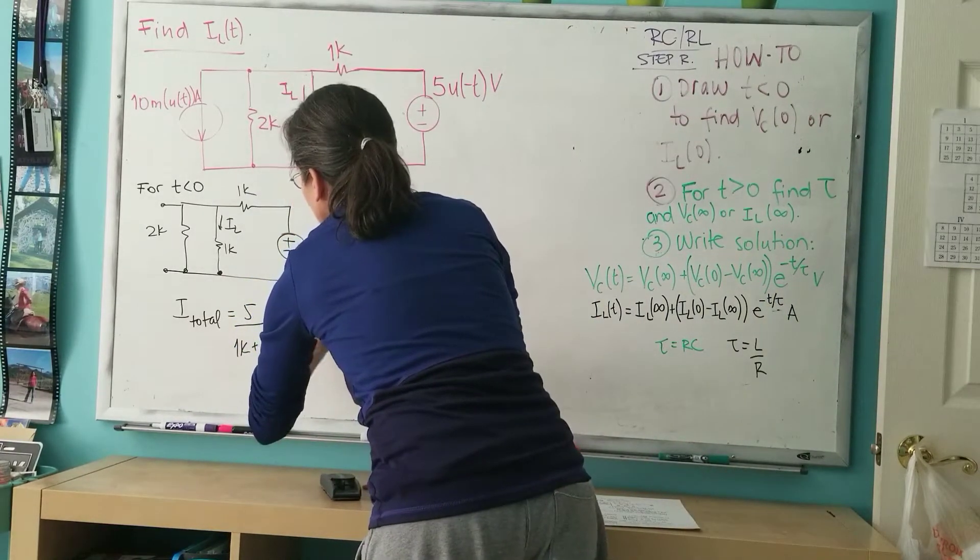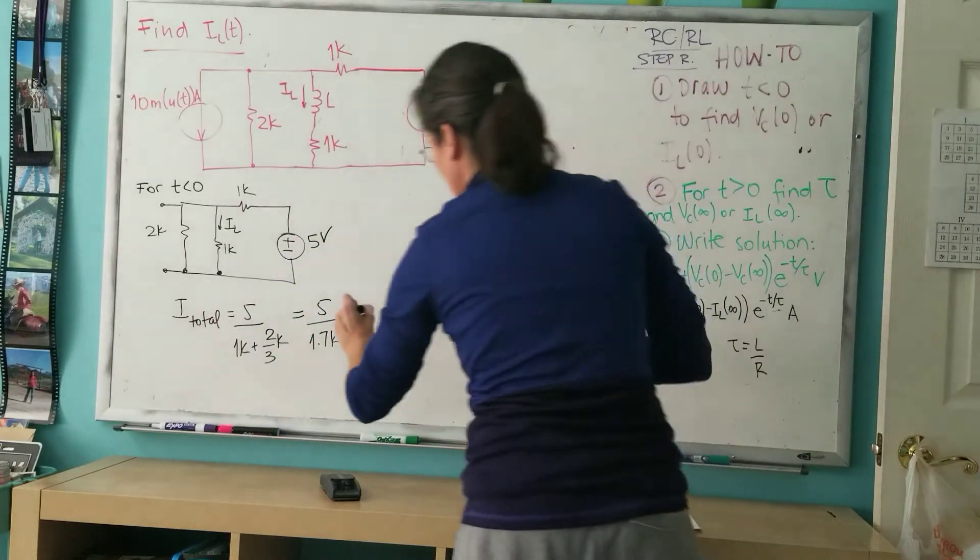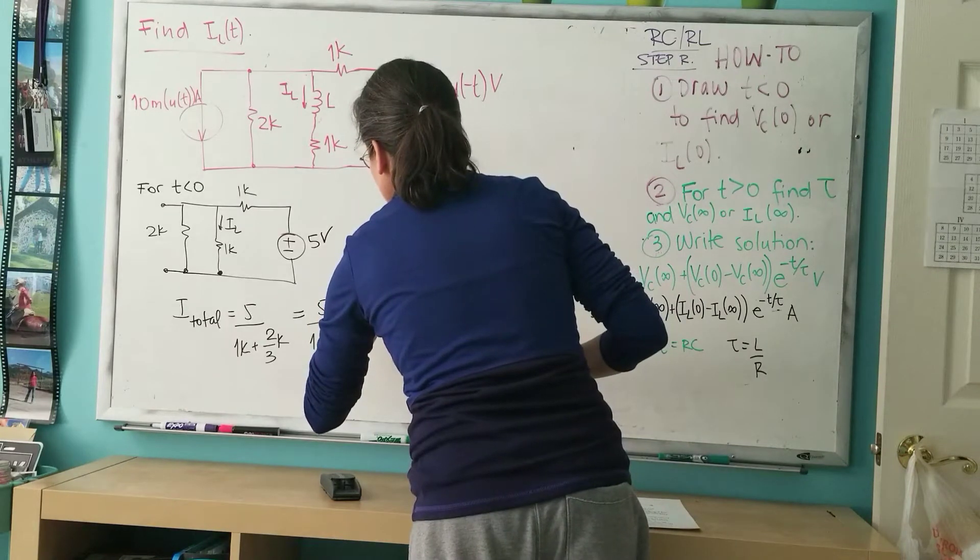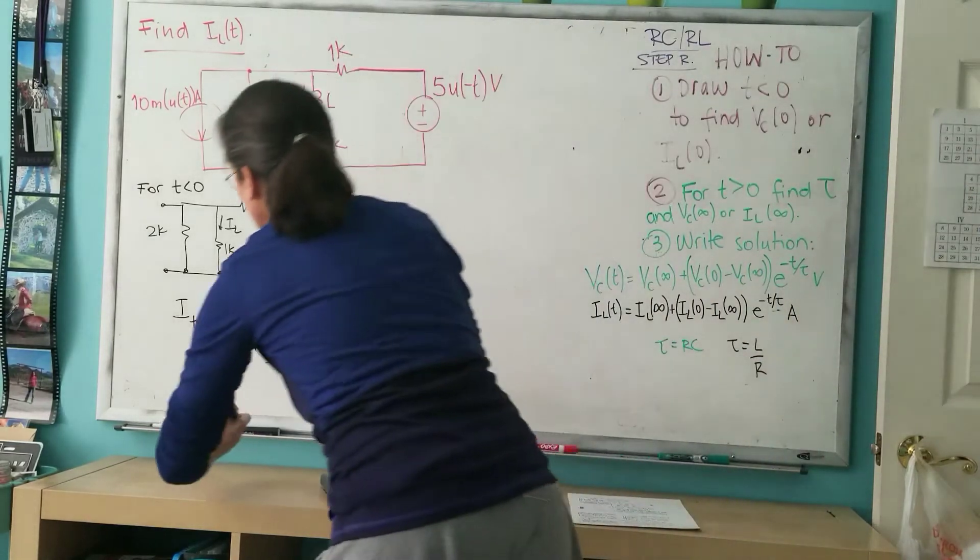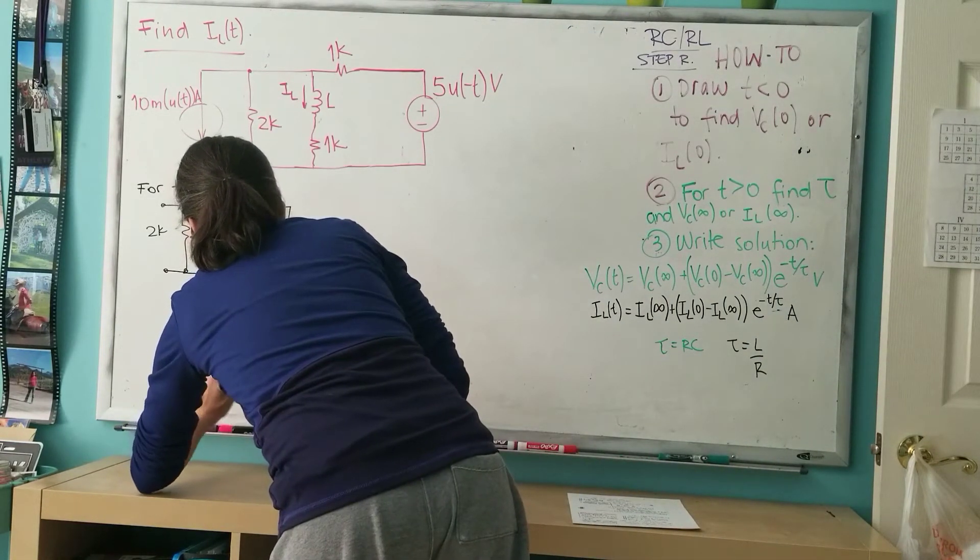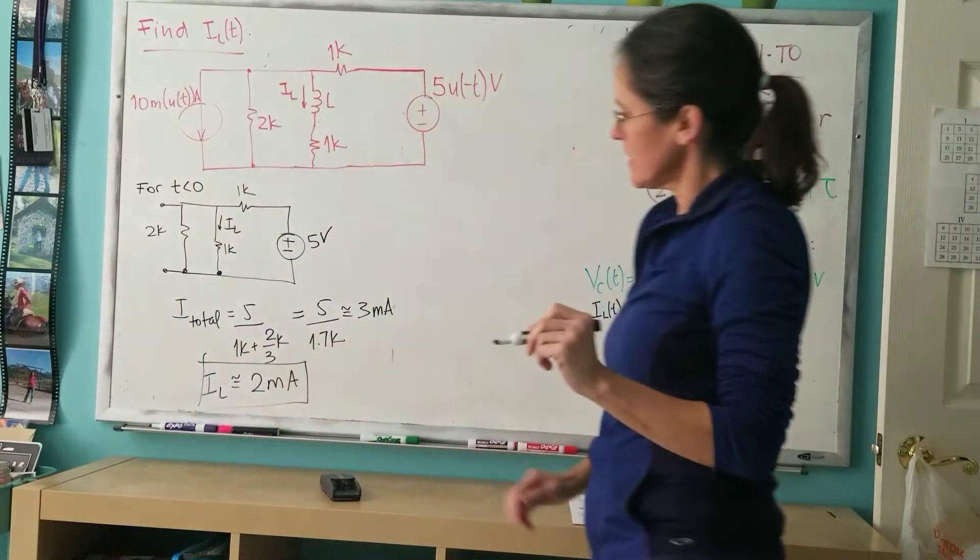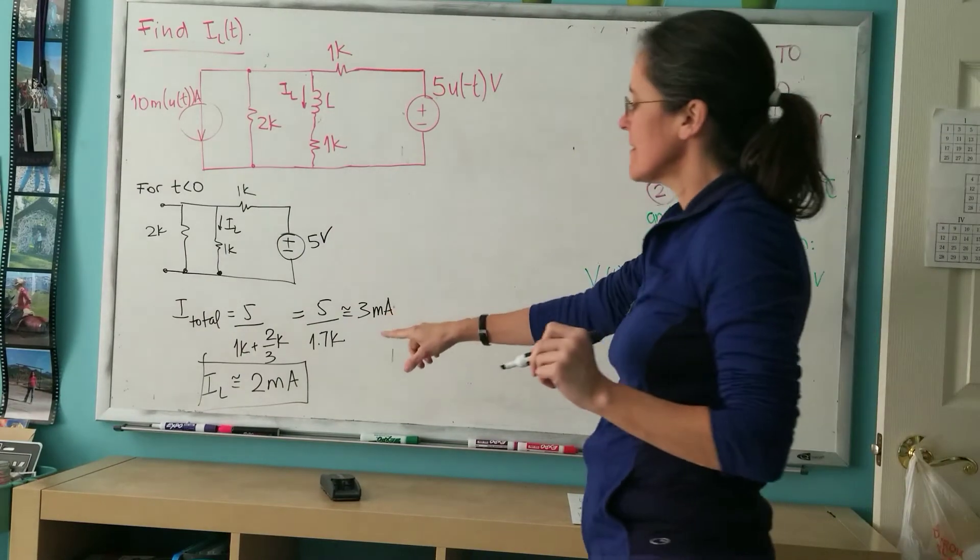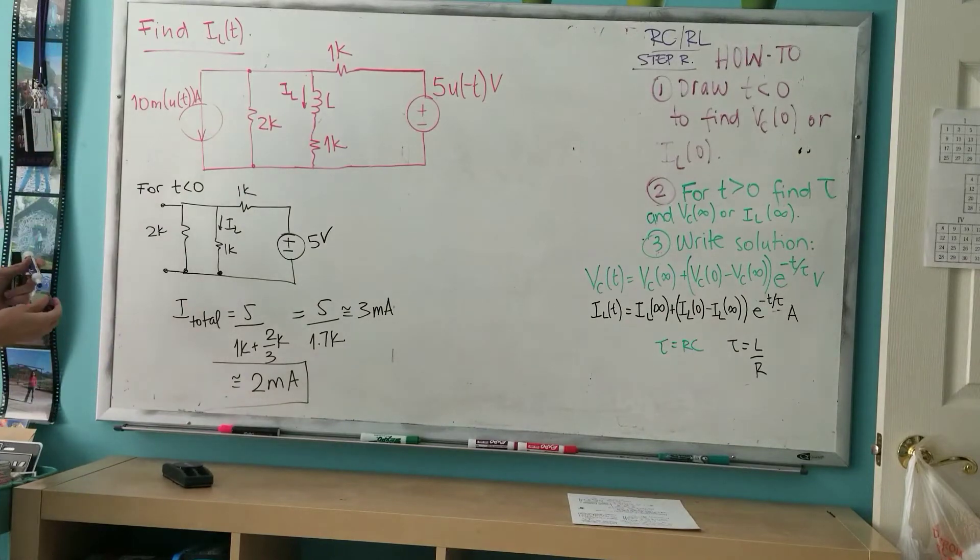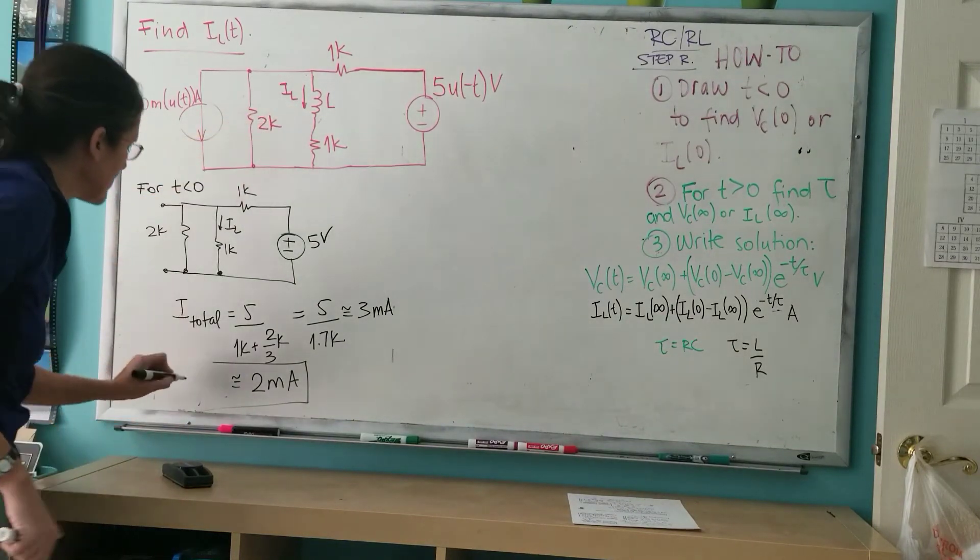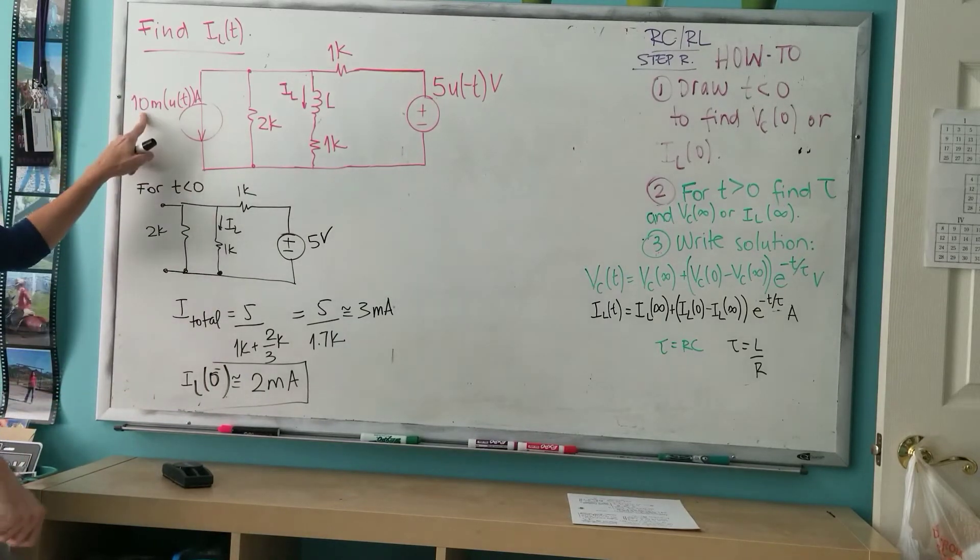So it's five divided by 1.7k, which I'm going to call like three milliamps. I realize I don't have a calculator here. And so IL will be approximately 2 milliamps. This is the IL at zero minus, the current through the inductor in this particular direction just before the switch turns this on and turns this off.